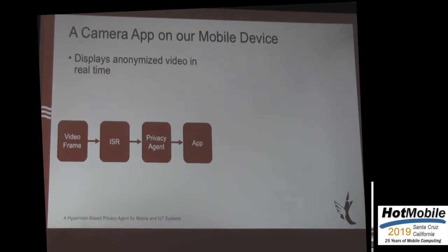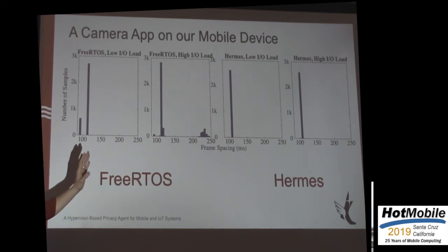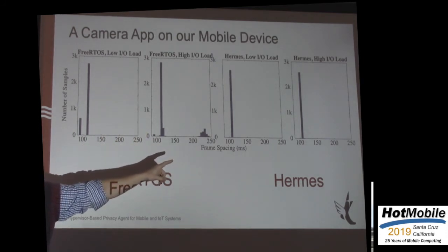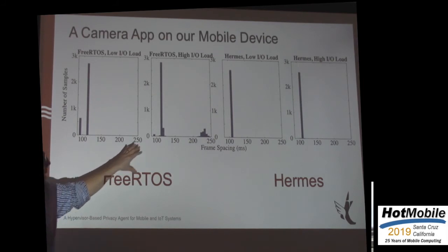Here's the chain of events: a video frame comes in from the camera, gets processed by the ISR — the interrupt hook — which hands it off to the privacy agent. The privacy agent anonymizes it and hands the anonymized data off to the app. The question is: we added this extra computationally intensive block because we're trying to do video analytics in real time. Can we do that on a mobile platform, or do we have to offload that task to some edge device or the cloud? We ran this test to see what the performance of that privacy agent is, and in particular what effect it has on perceptual video quality in real time.